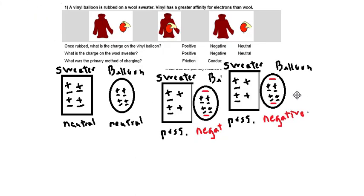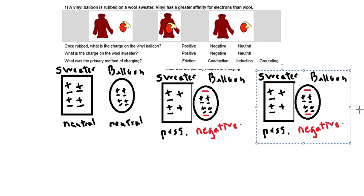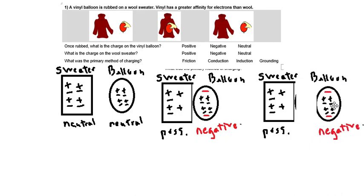The third part would be the separation of the two items. And the balloon is removed from the sweater. And as we can see the balloon is still negative and the sweater is still positive. We know the primary force that caused this charging was friction, because the items didn't just touch but they were rubbed against each other creating friction.